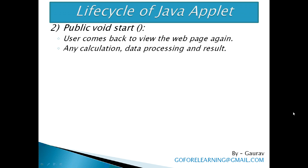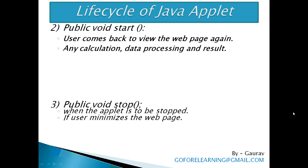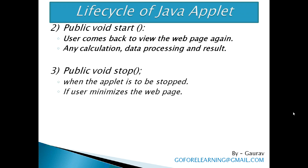The next is public void start. This method is called after the init method and each time the applet is revisited by the user. If the user has minimized the web page that contains the applet and moves to another page, then this method's execution is stopped. When the user comes back to view the web page again, the start method execution will resume. Any calculation or data processing should be done in this method and the results are also displayed.